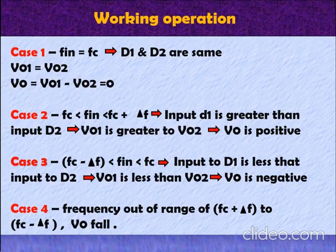The first case is fin equals to FC. When the input frequency is instantaneously equal to fin, the induced voltage in the winding of T1 is exactly equal to that induced in the winding of T2. Thus, the input voltages to both the diodes D1 and D2 will be the same. Therefore, their DC output voltages V01 and V02 will also be identical but they have opposite polarities. Hence, the net output voltage V0 equals to 0.